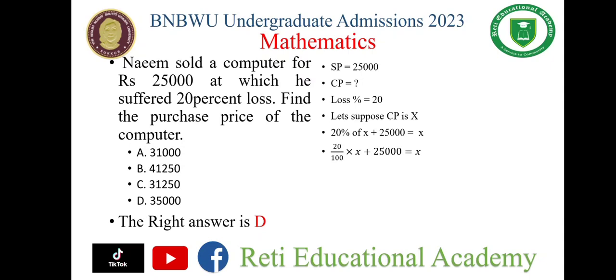20 upon 100 multiplied by X plus 25,000 is equal to X. When we simplify the fraction 20 upon 100, it will be 1 upon 5. So: (1/5) multiplied by X plus 25,000 is equal to X.